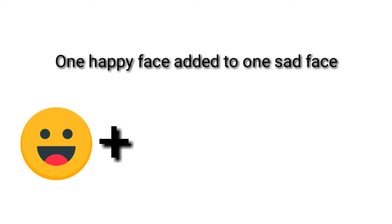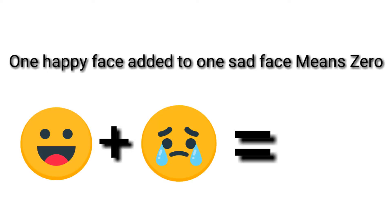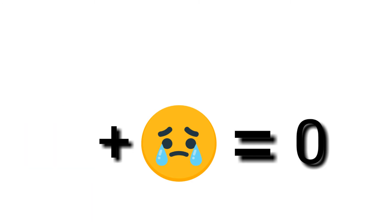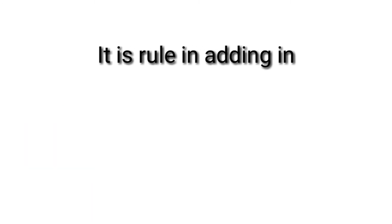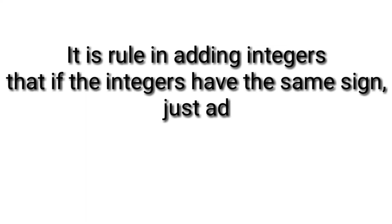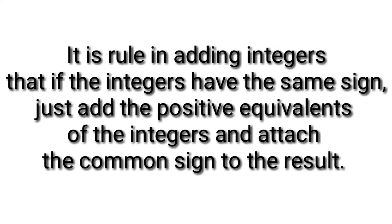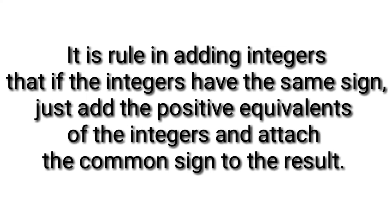One happy face added to one sad face means zero. It is a rule in adding integers that if the integers have the same sign, just add the positive equivalence of the integers and attach the common sign to the result.